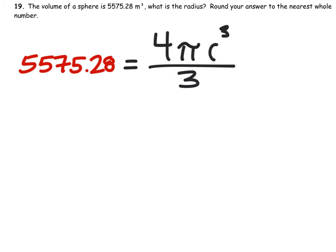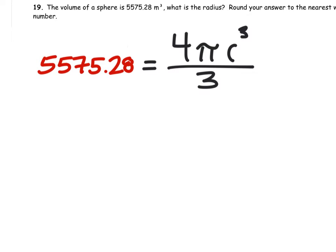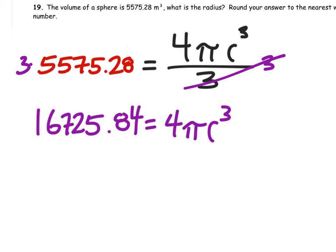Now we are solving for the radius, so let's go ahead and multiply both sides by 3. And that cancels out to 3, so we've got 4πr³. And that equals 16,725.84.